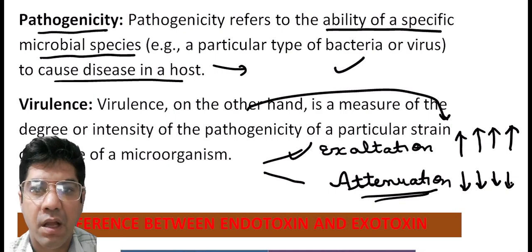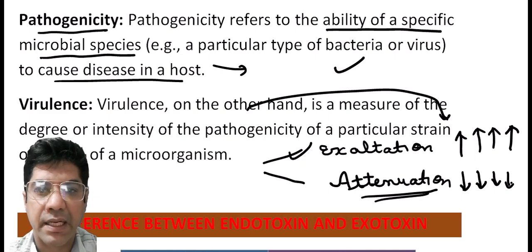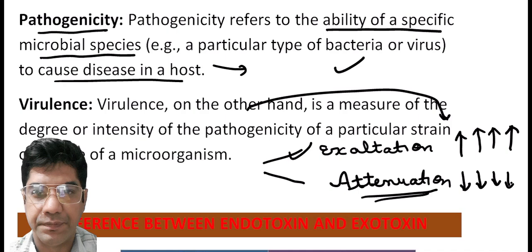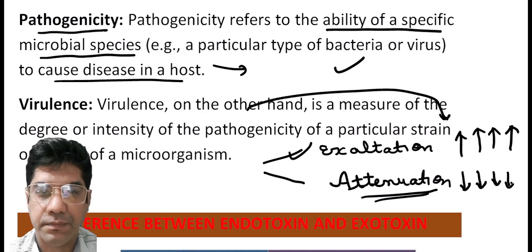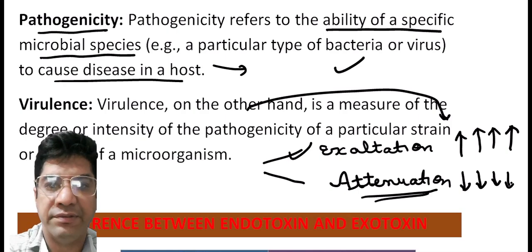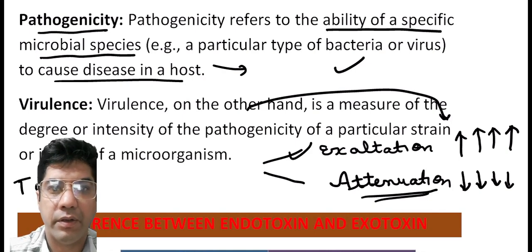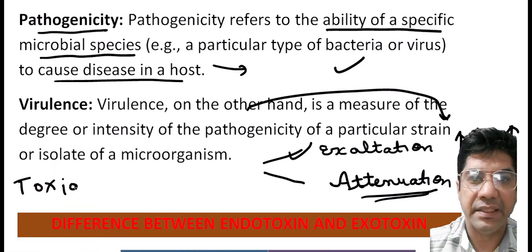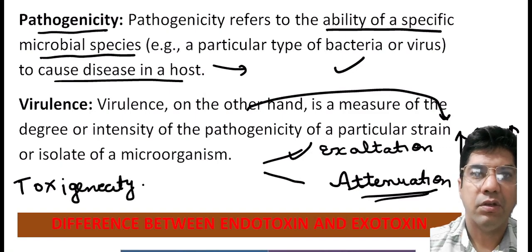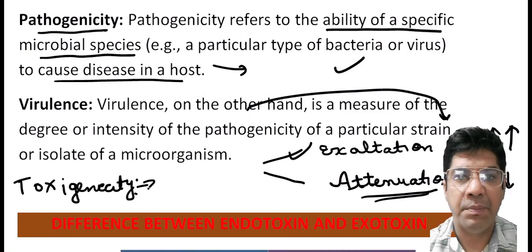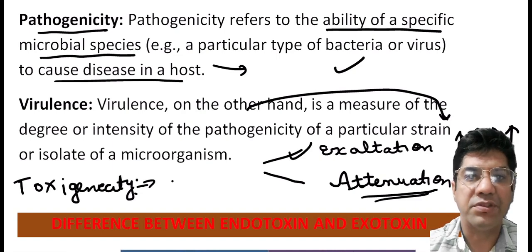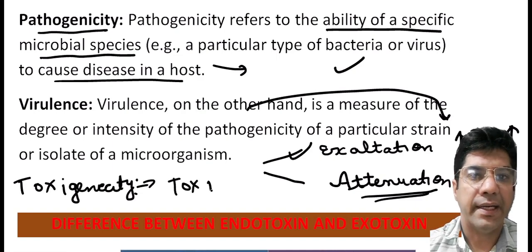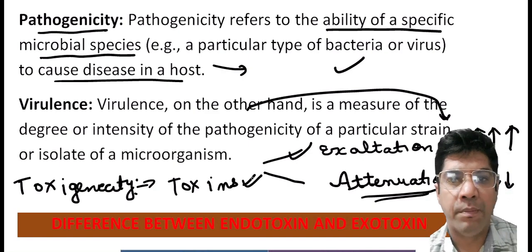Methods of attenuation include passing the microbes through unfavorable hosts, repeated culture in artificial media, or subjecting them to high temperatures. Another terminology you should know is toxigenicity — toxigenicity is the ability of certain bacteria to produce toxins that can cause harm to the host. Bacterial toxins are a key factor in the pathogenesis of many infectious diseases.